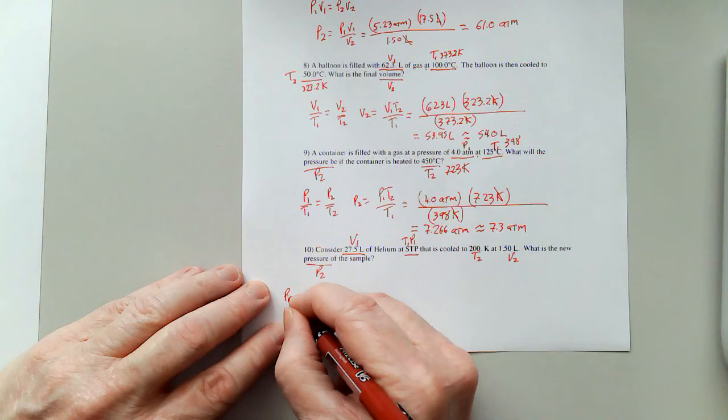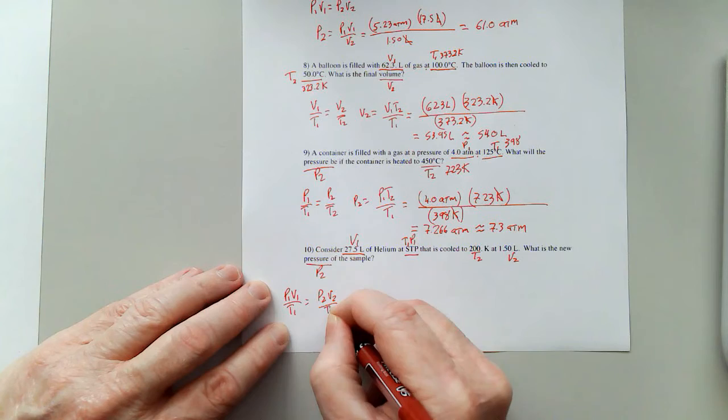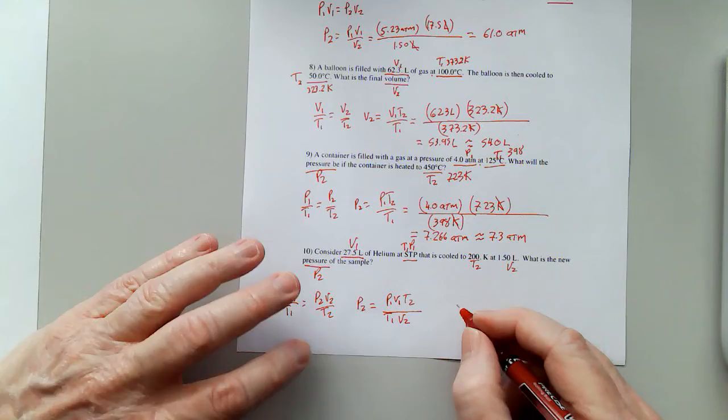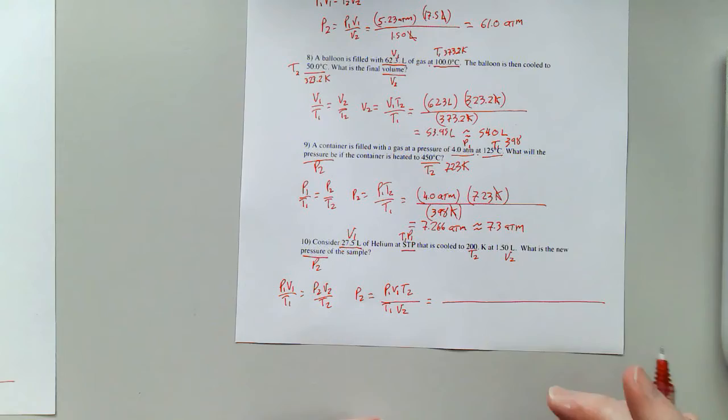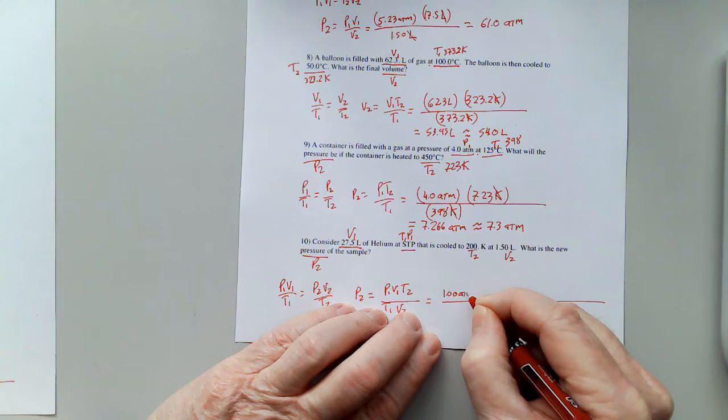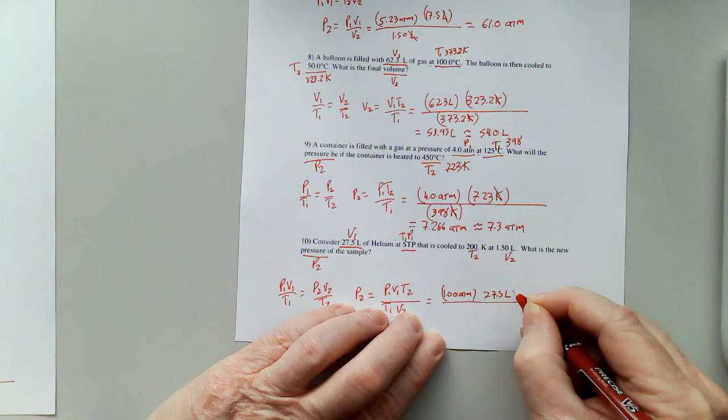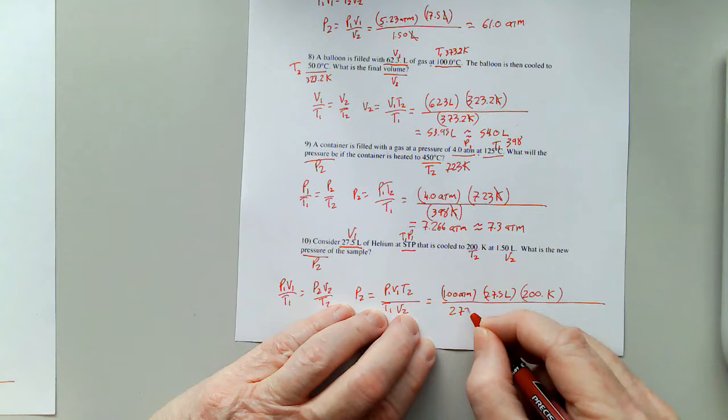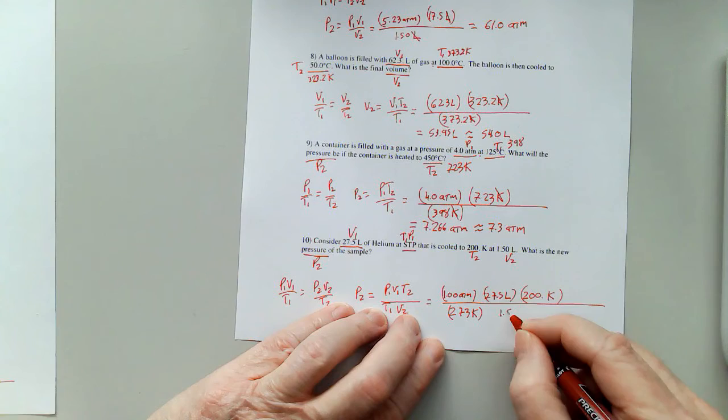P1 V1 over T1 equals P2 V2 over T2. P2 is going to equal P1 V1 T2 divided by T1 V2. Take the algebra nice and slow if you need to. So my first pressure is 1.00 atmospheres, my first volume is 27.5 liters, T2 is 200 Kelvin, T1 is going to be 273 Kelvin, and then V2 is 1.50 liters.